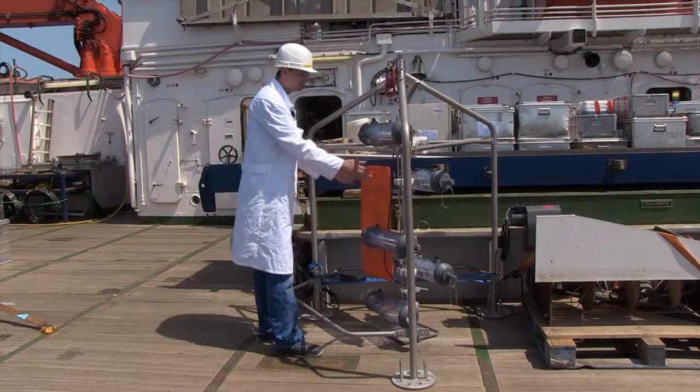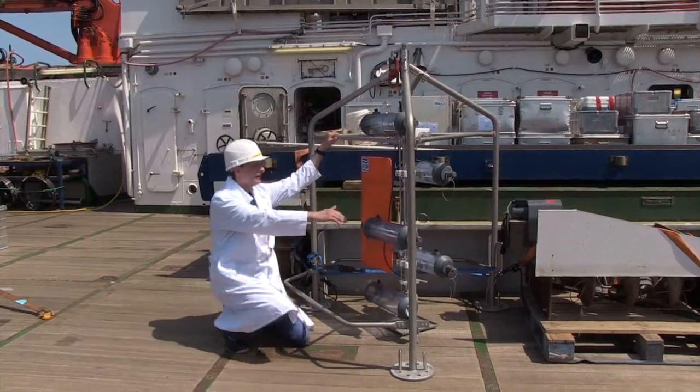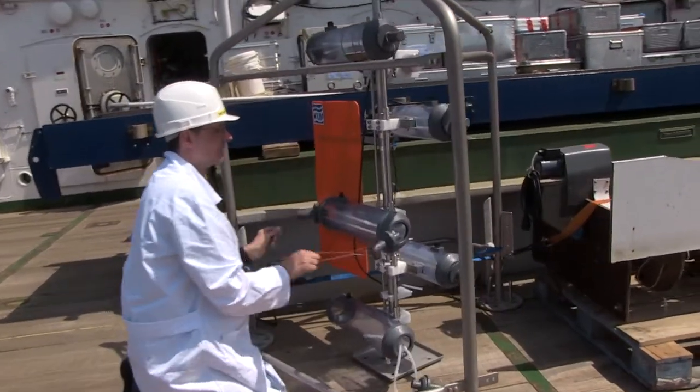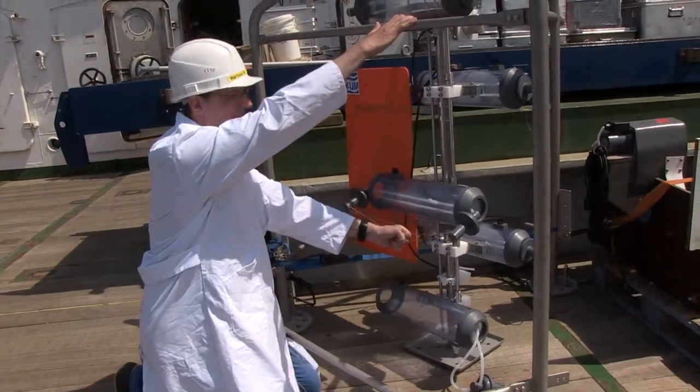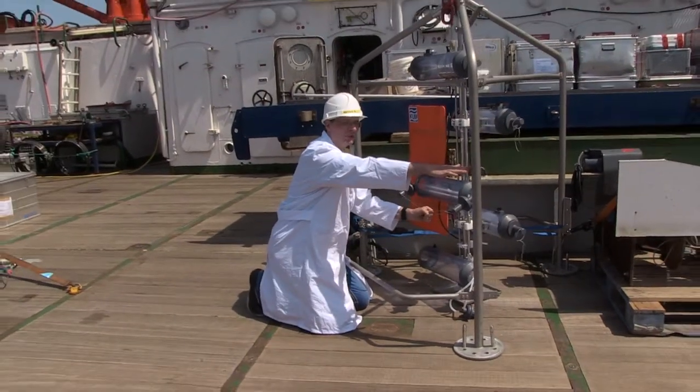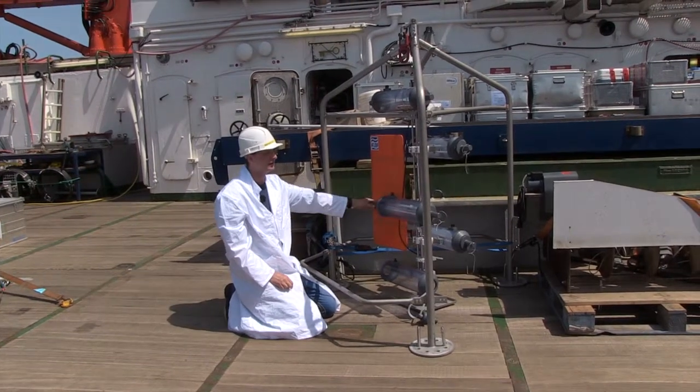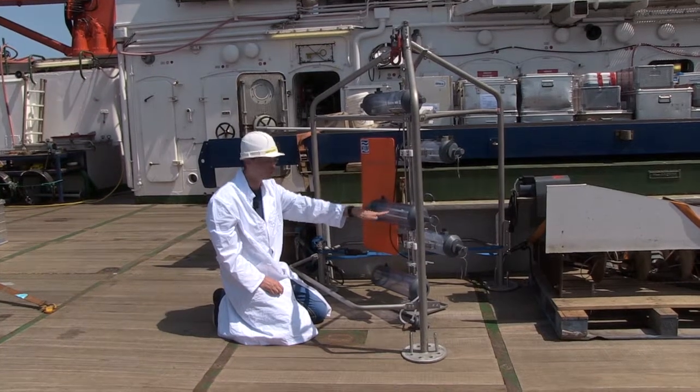The bottom water sampler has five Niskin bottles, arranged in parallel at different levels, which are first opened and then remain cocked and ready. As soon as the bottom water sampler rests gently on the seabed, the lids of the Niskin bottles close and seal the water from the seabed in the bottles.